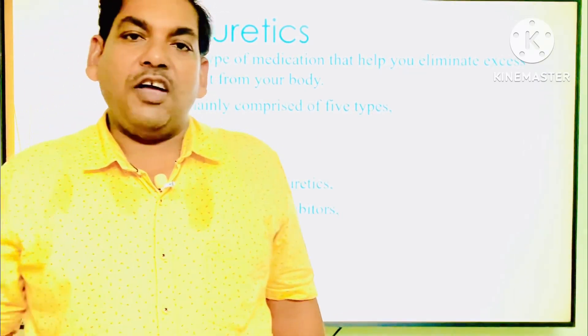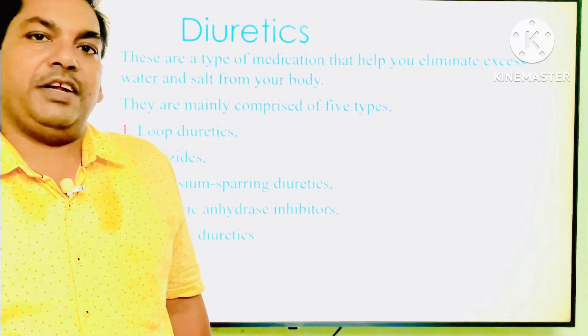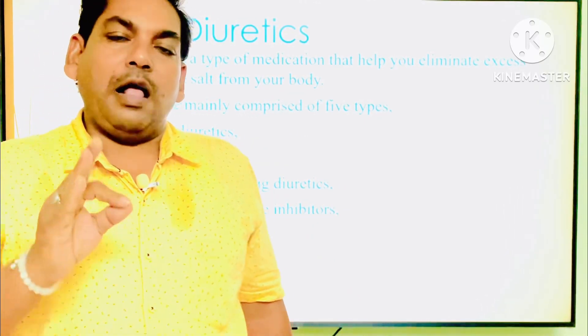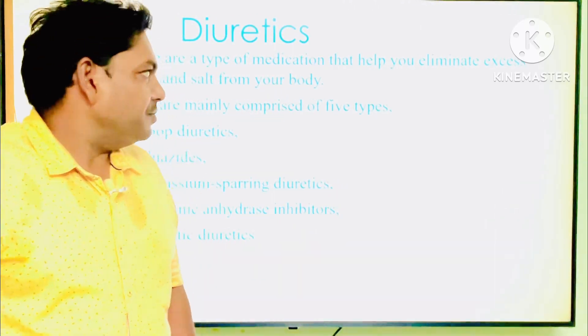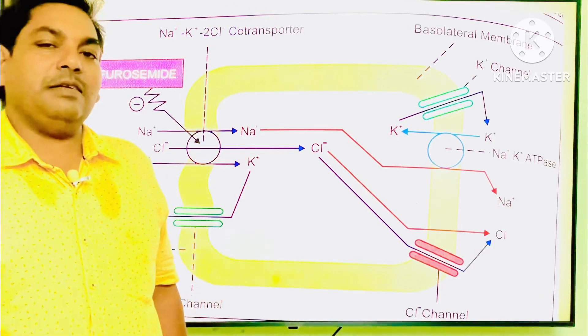The five types are: loop diuretics, thiazide and potassium-sparing diuretics, carbonic anhydrase diuretics, and osmotic diuretics.